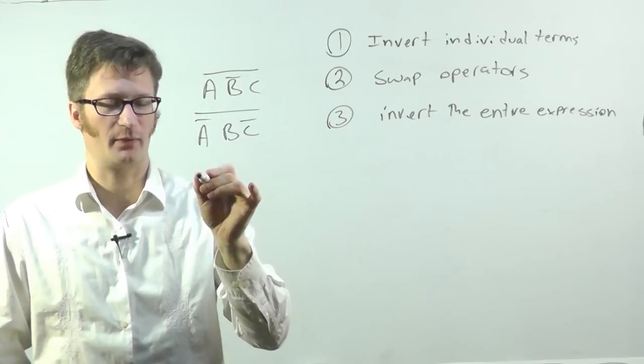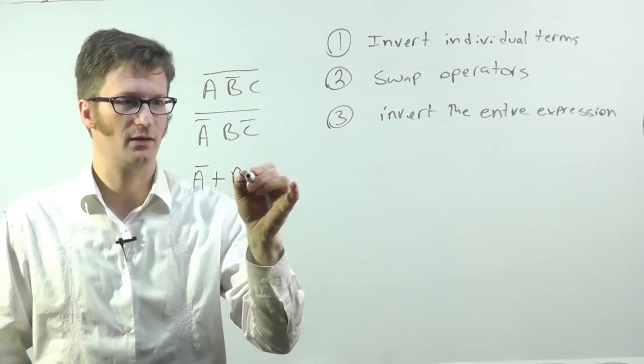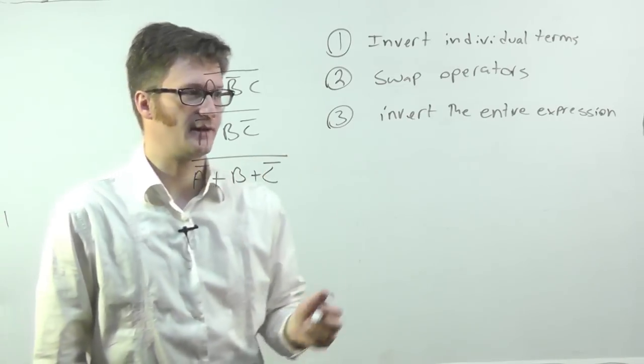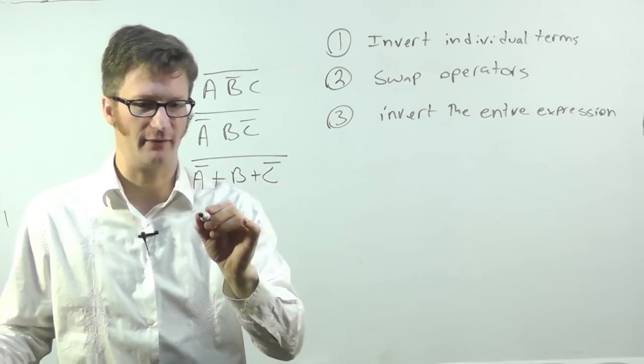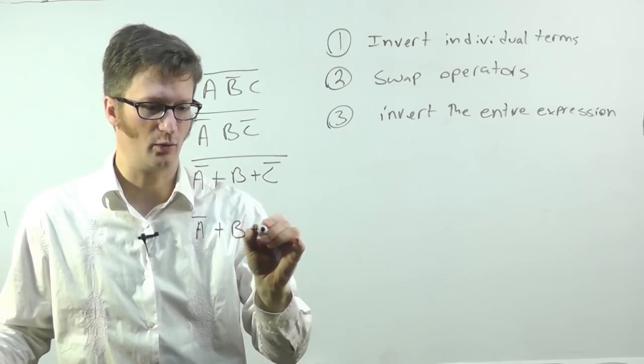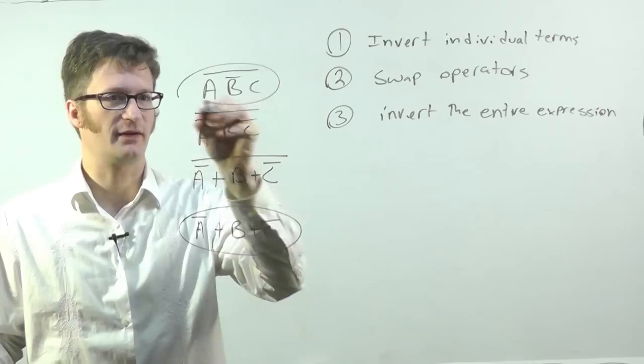Anyway, so we're going to swap the operators. So I have A bar or B or C bar. And then finally, I'm going to invert the entire term. So I have A bar or B or C bar. And this is equivalent to this.